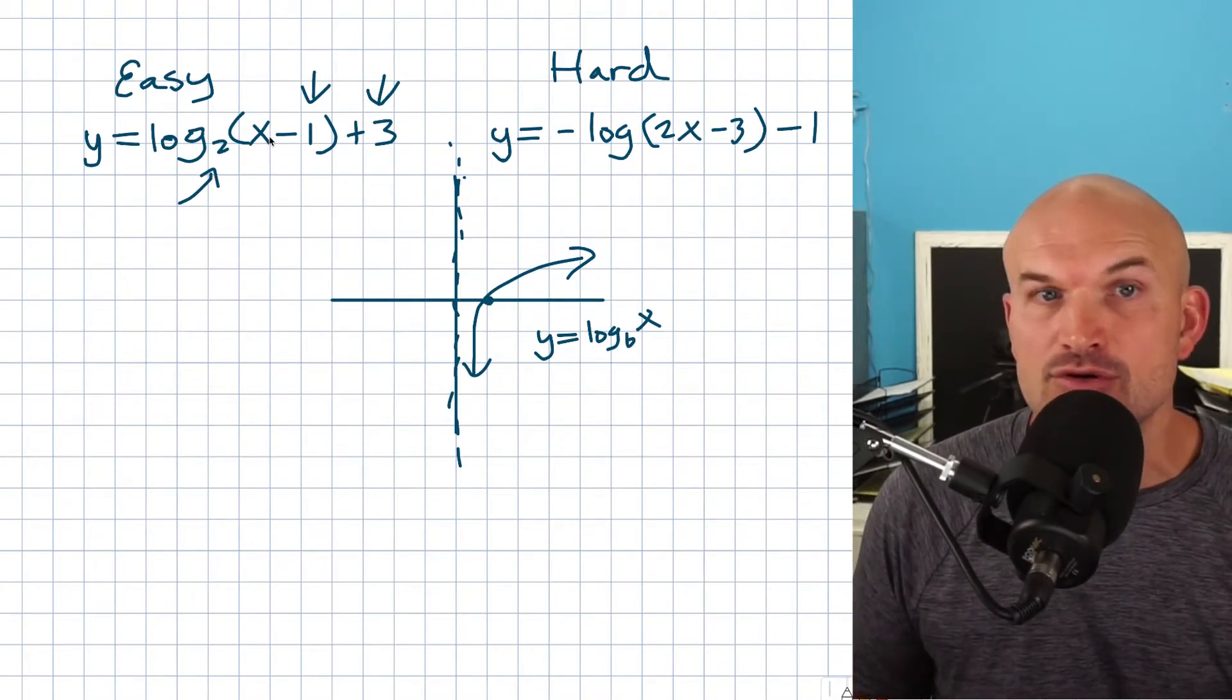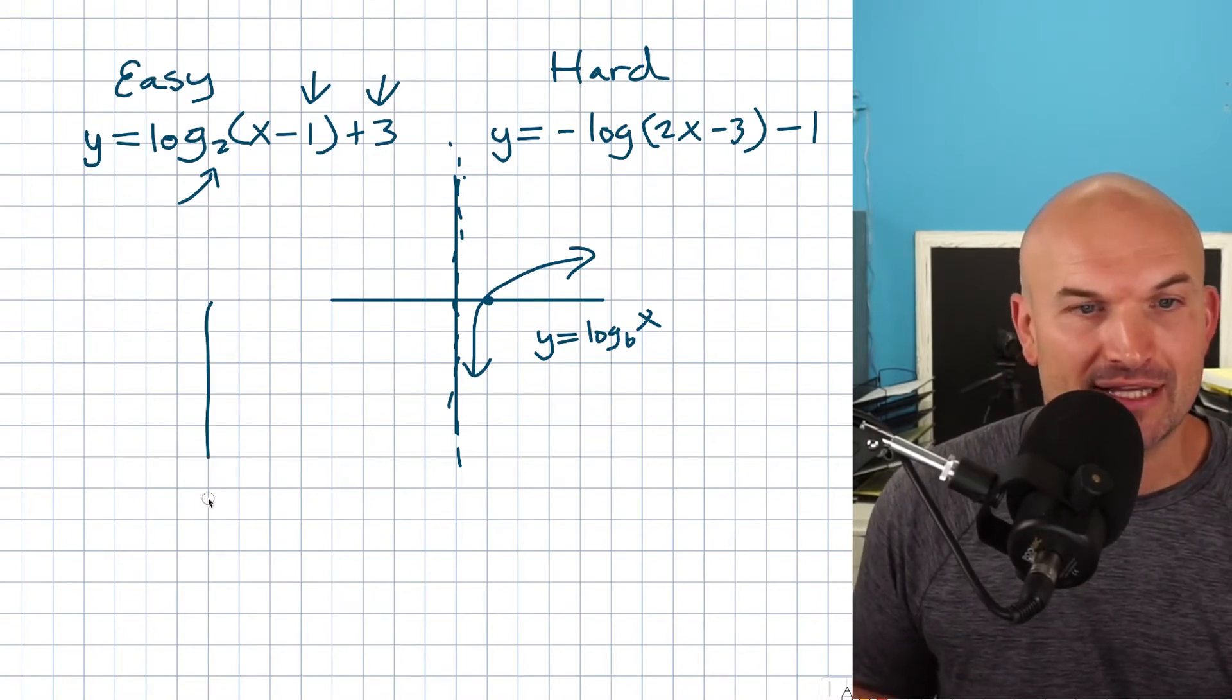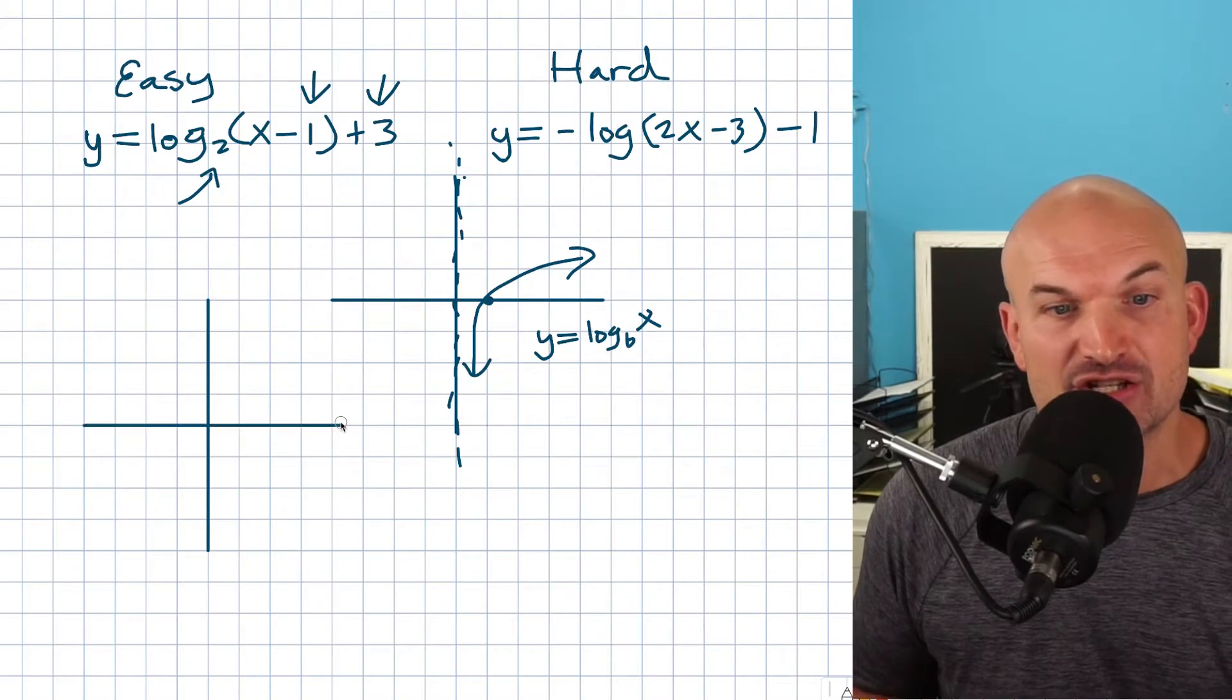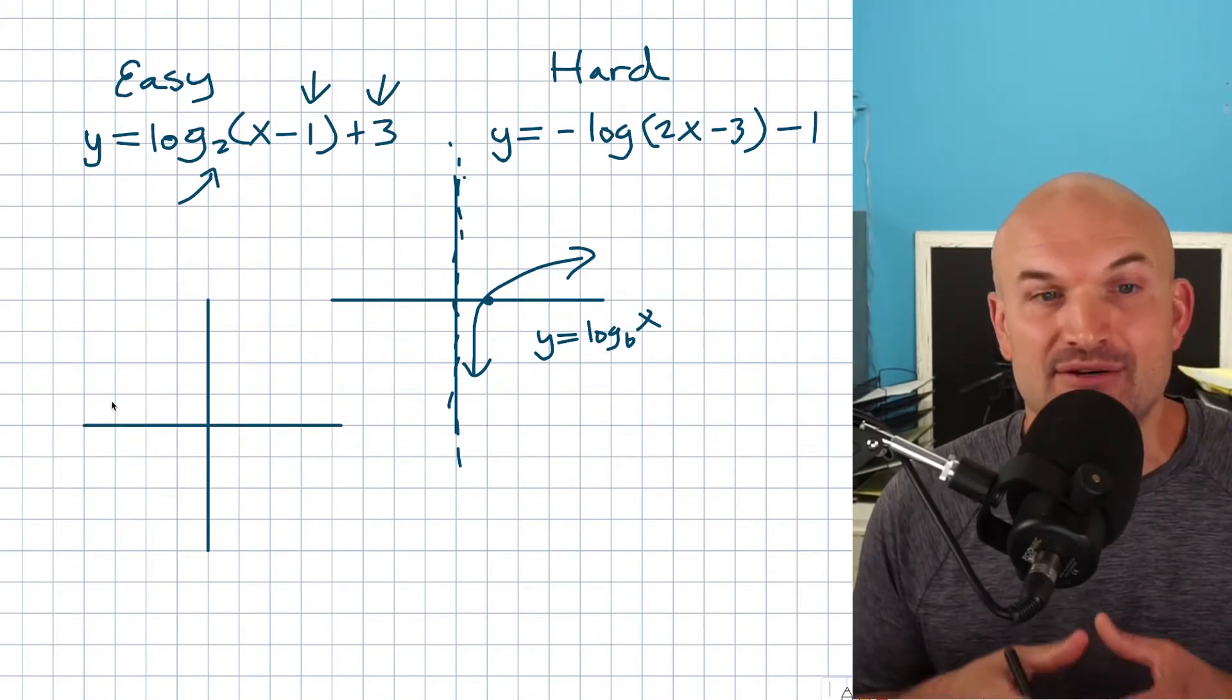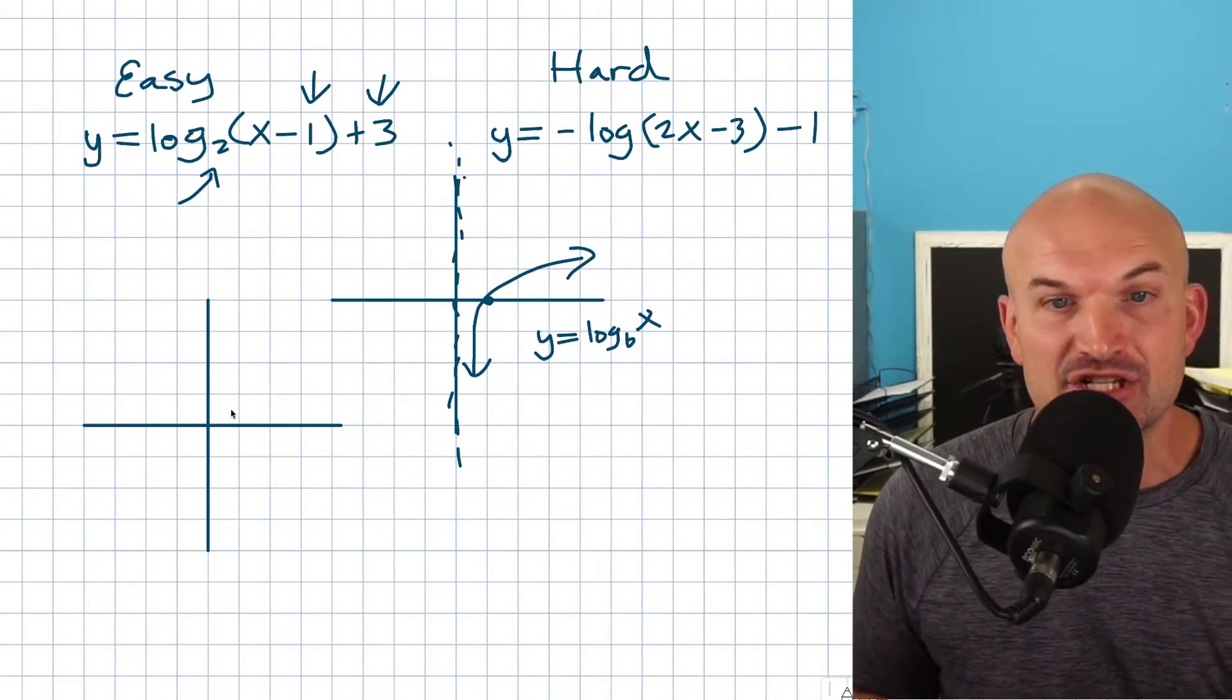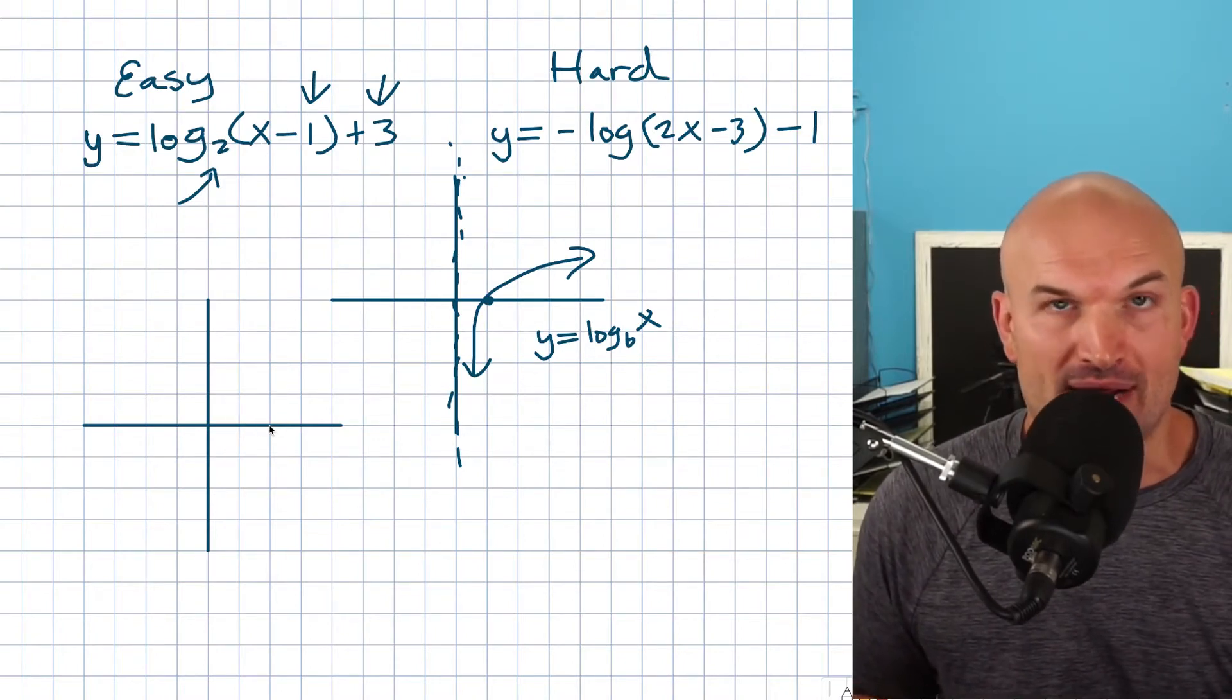So what exactly is this horizontal transformation? A lot of times students will get tricked up when they go ahead and look at x minus 1 and they'll think it's going to be a horizontal transformation by shifting one unit to the left. But it's actually the opposite when you're dealing with something inside of the function. So in this case, x minus 1 is actually a horizontal shift one unit to the right.